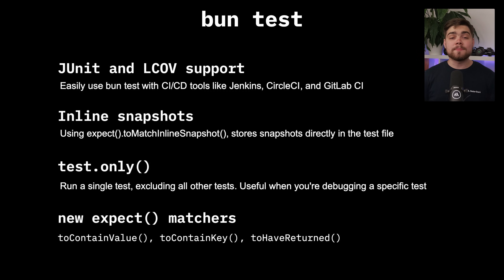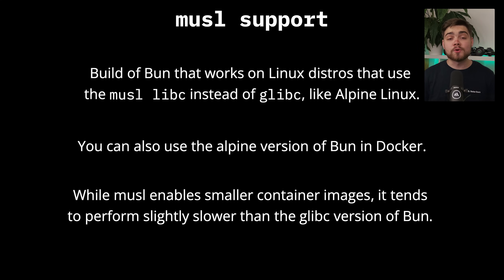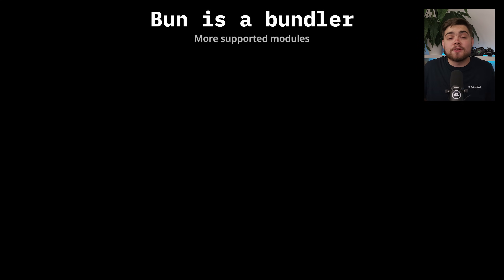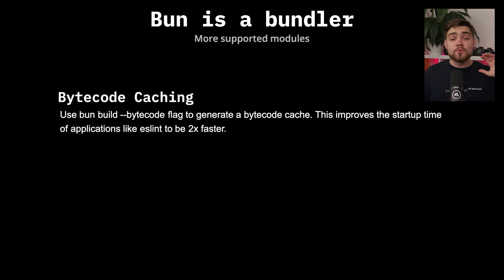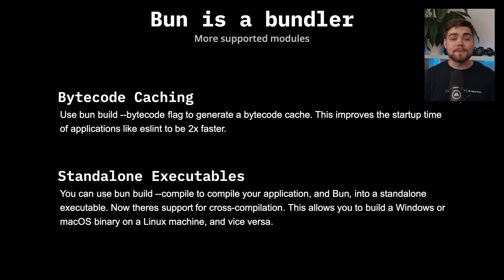For deployment, BUN now includes musl support enabling it to run on Alpine Linux and other musl-based distributions, which is perfect for minimal Docker containers, though watch out for some performance implications. They've also improved standalone executable compilation with cross-compilation support, meaning you can build Windows executables from Linux and vice versa. The new bytecode caching feature can make applications like ESLint start up two times faster, and you can now customize icons and console visibility for Windows builds.